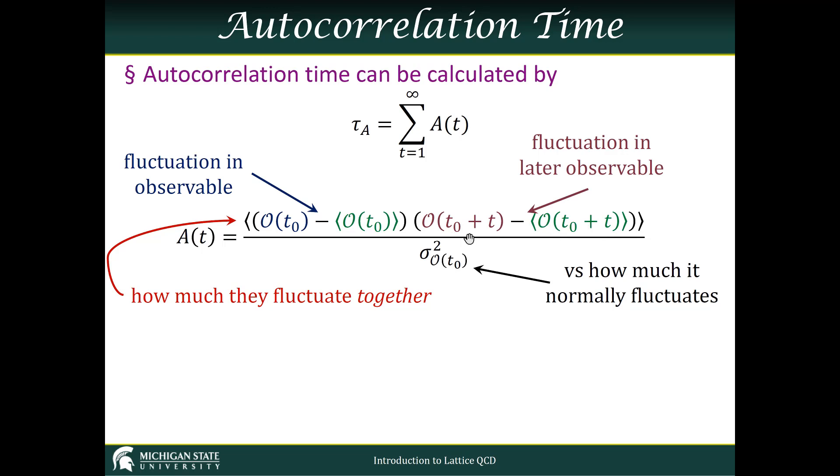What we're looking at here is if the observable is fluctuating higher at a particular time, and we notice that at a later time, it's also fluctuating higher. And when this is lower at a time,